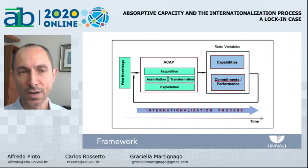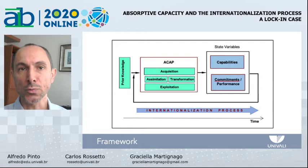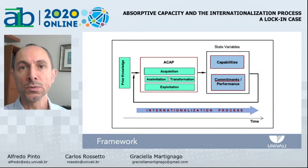Our study aims to explain how relevant external information is acquired and incorporated into the Uppsala state variables. As Uppsala evolved, adding dynamic capabilities to the model, the dynamic capability called absorptive capacity has been used in international business research to address questions related to knowledge absorption and its application into firms' capabilities. We applied this framework to study knowledge absorption and its impact on Uppsala state variables.